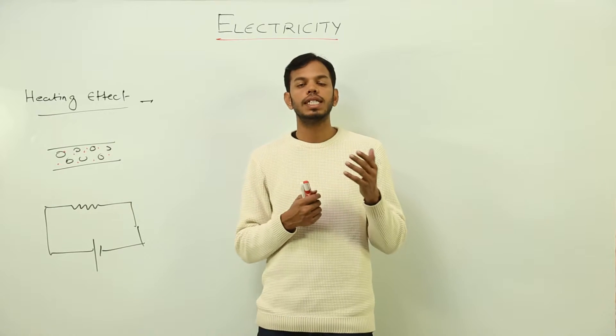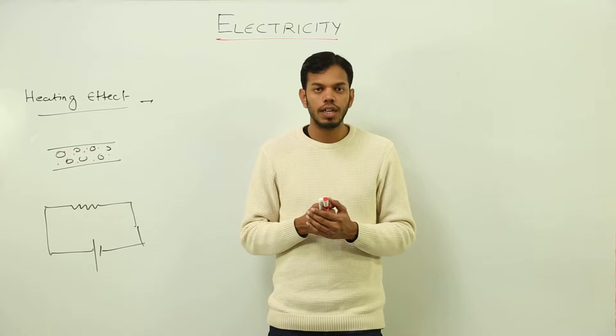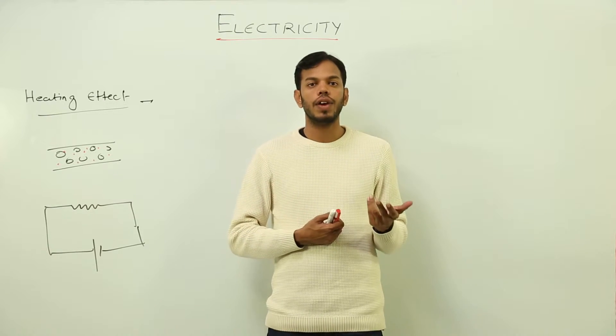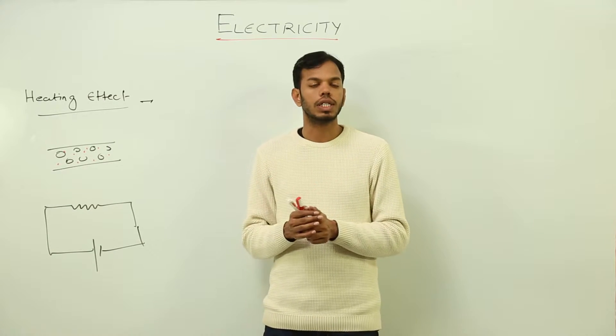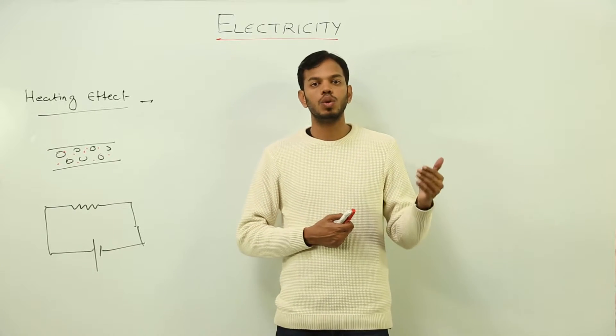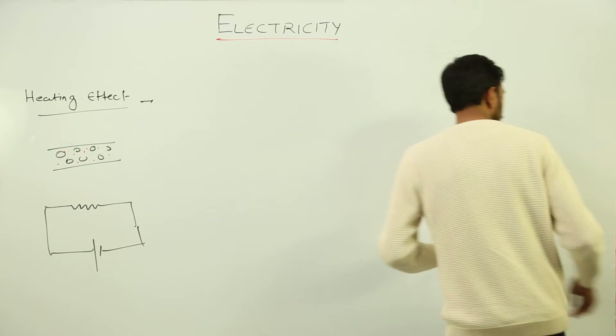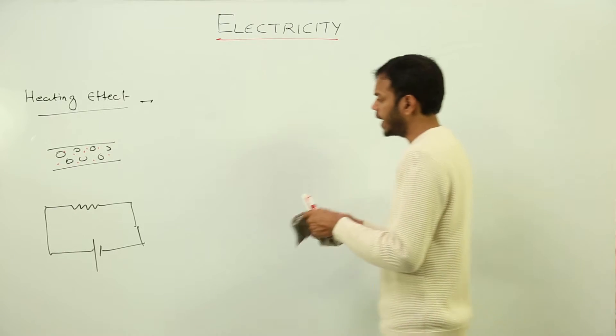So what is happening? The total energy is actually consumed in two ways. The major part is consumed in doing useful work, for example lighting the bulb, switching the fan on, or rotating the fan. All these are mechanical works. And the rest part of the energy is wasted in the form of heat. So that is what we mean by heating effect of current.